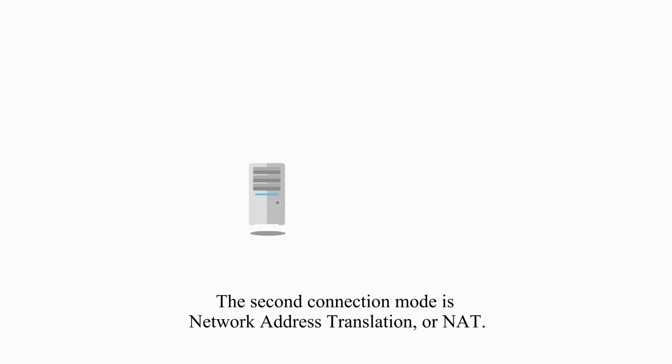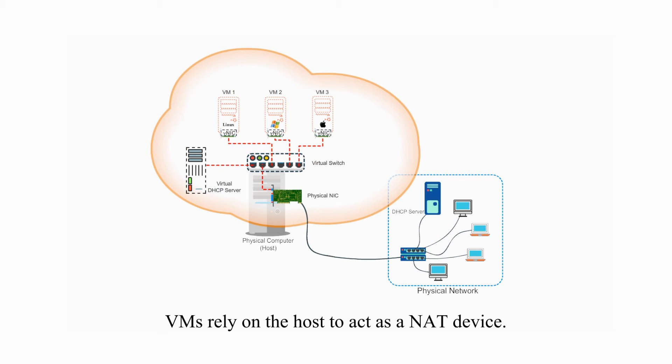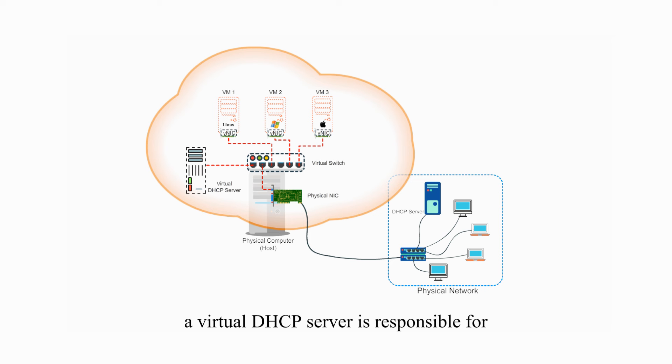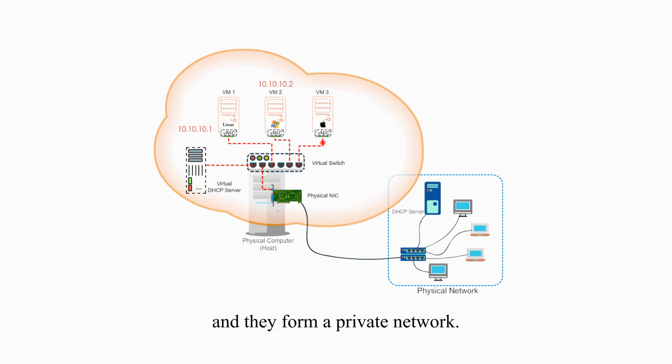The second connection mode is network address translation, or NAT. In this mode, virtual machines rely on the host to act as a NAT device. With the NAT mode, virtual DHCP server is responsible for assigning IP addressing information to these virtual machines.